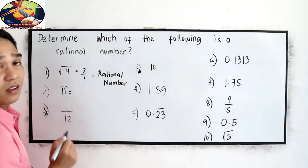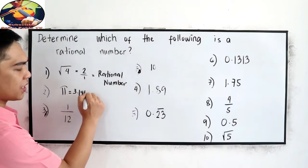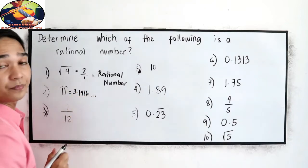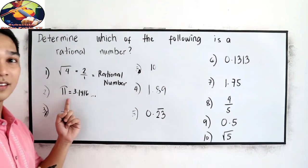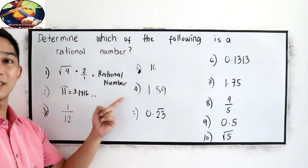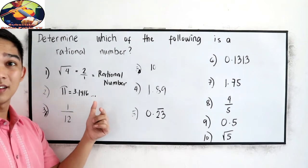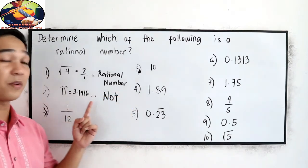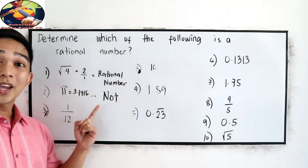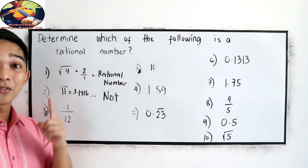Number 2: pi. The value of pi is 3.1416 and so on. We know that pi has infinite decimal places. So this is not a rational number, because we cannot write it in a over b form.